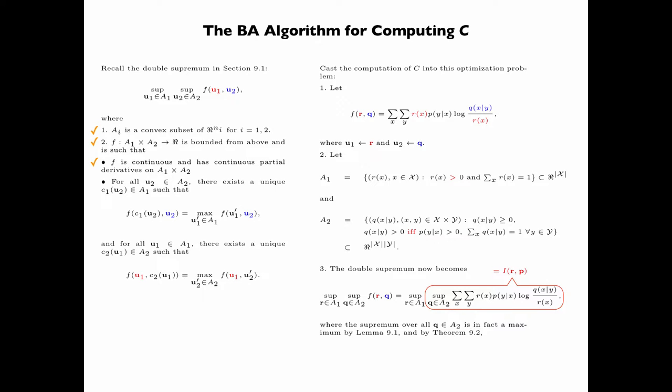Where the supremum over all Q in A2 by Lemma 9.1 is in fact a maximum equal to I(R;P). And by Theorem 9.2, F star, which is the value of this double supremum, is in fact equal to C.